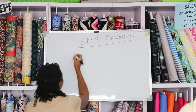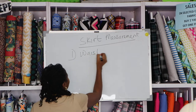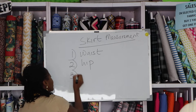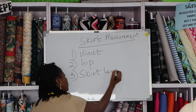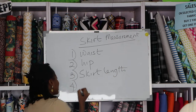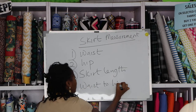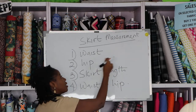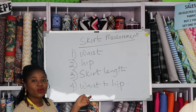For skirt measurement, the first measurement we need is our waist measurement. The second measurement is the hip, the third is the skirt length, and the fourth is the distance from the waist to the hip. So: the waist, the hip, the skirt length, and the waist to hip.